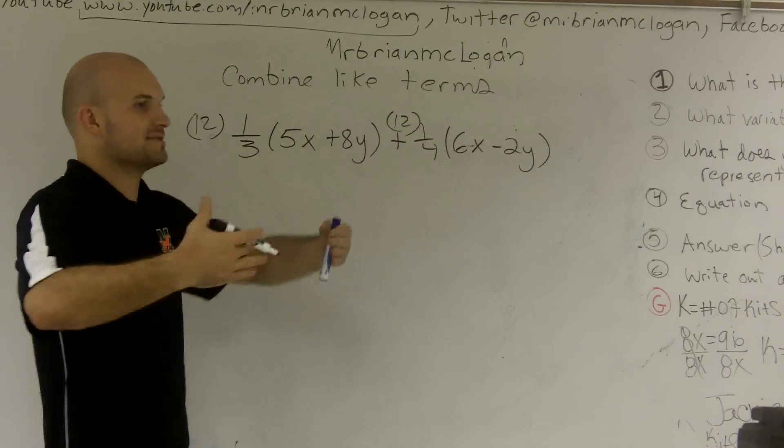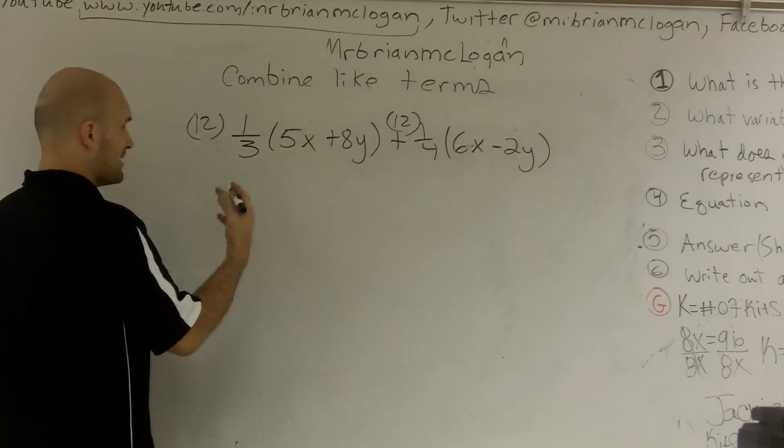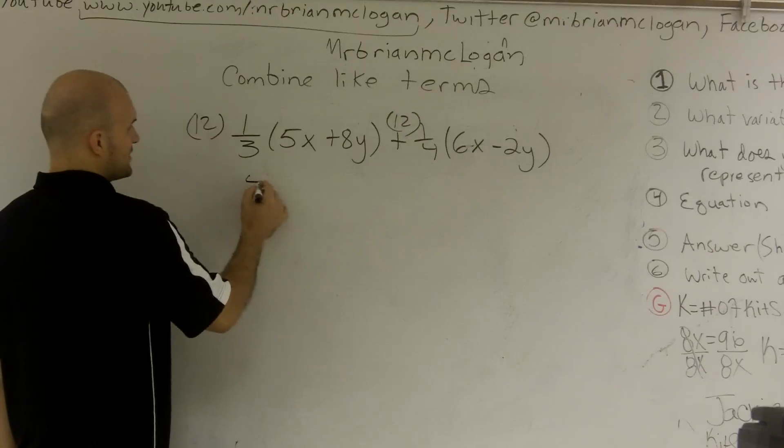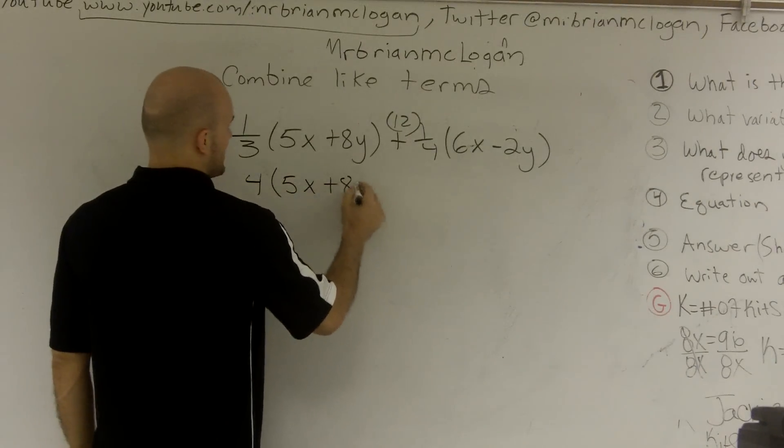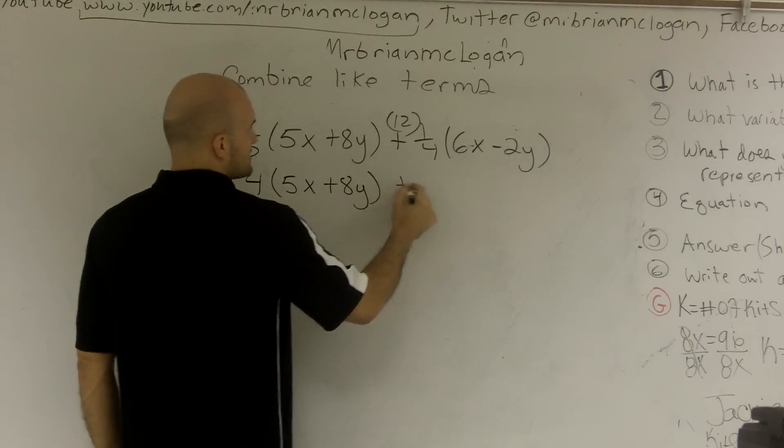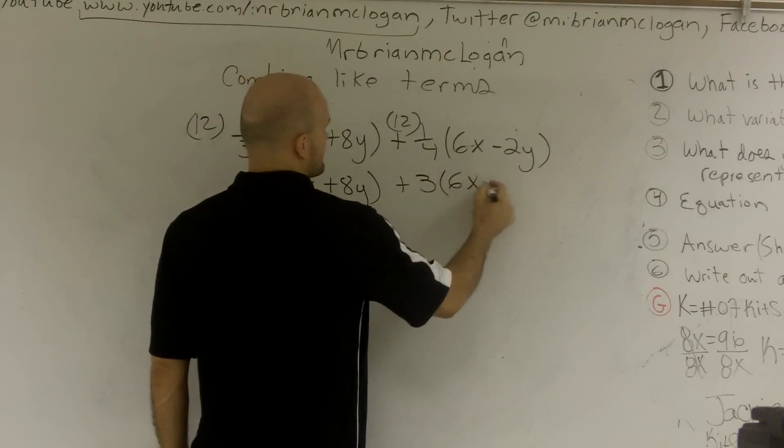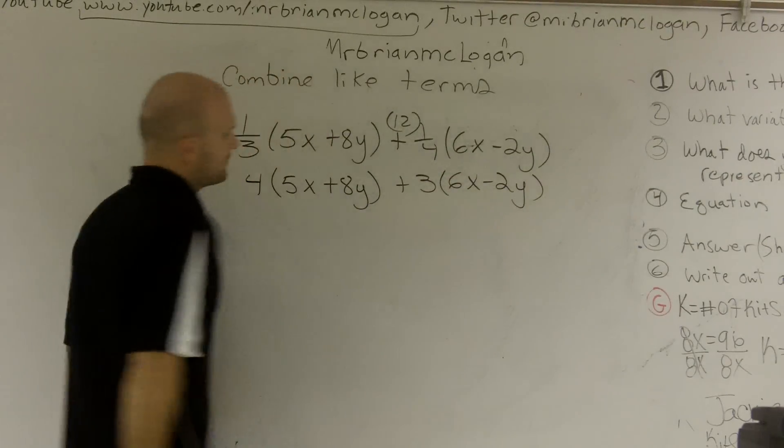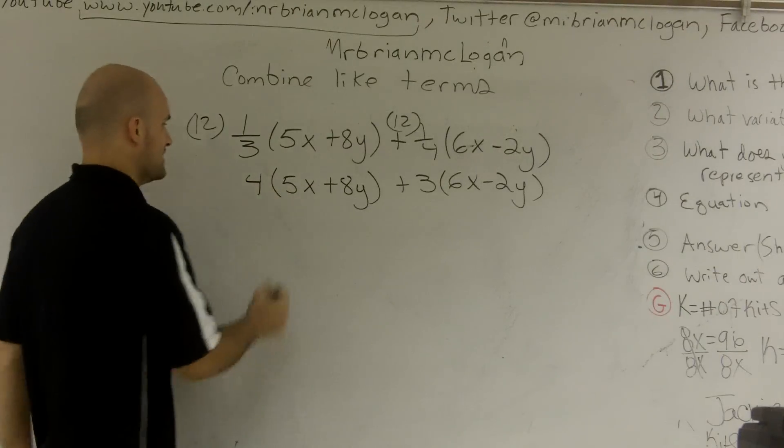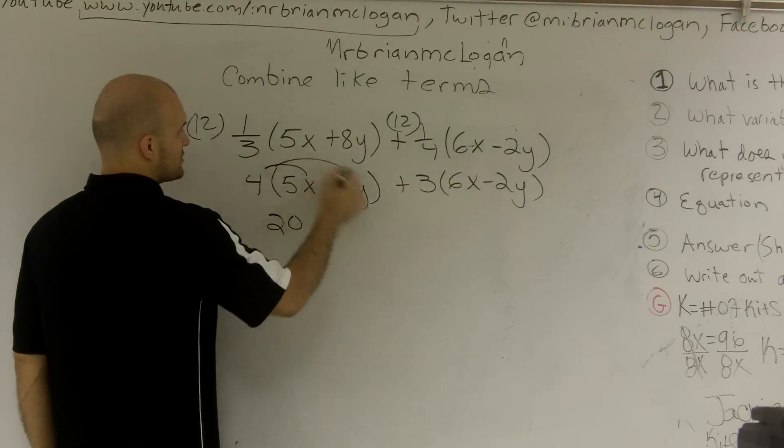12 divided by 3 gives me 4. 5x plus 8y plus 3 times 6x minus 2y. Now I don't have any fractions. And now it's very easy for me to see, do the distributive property.